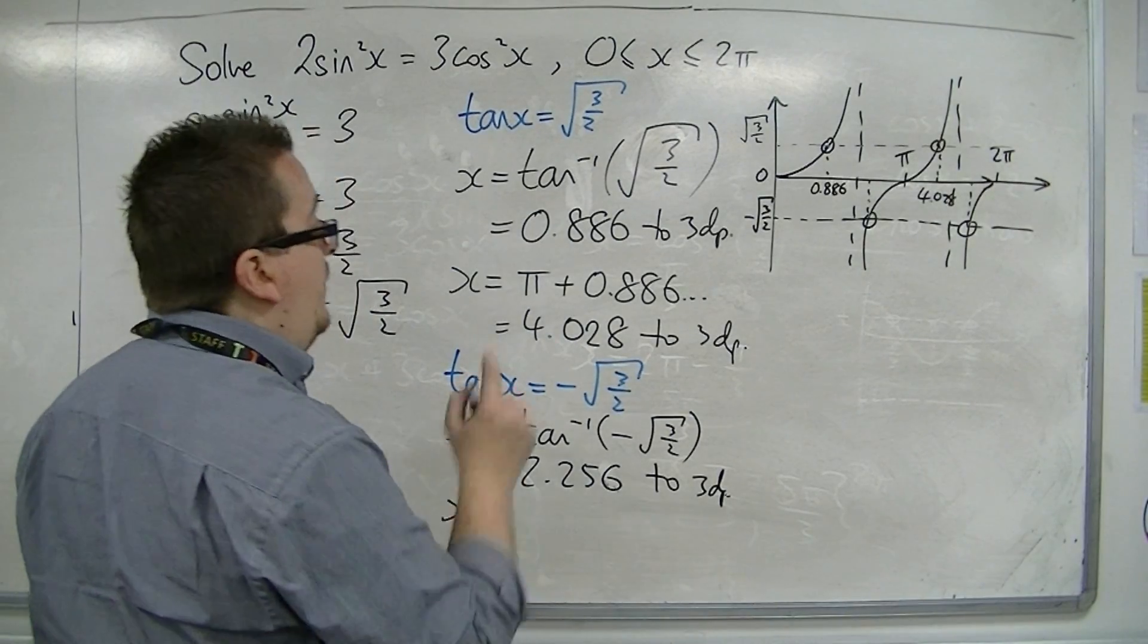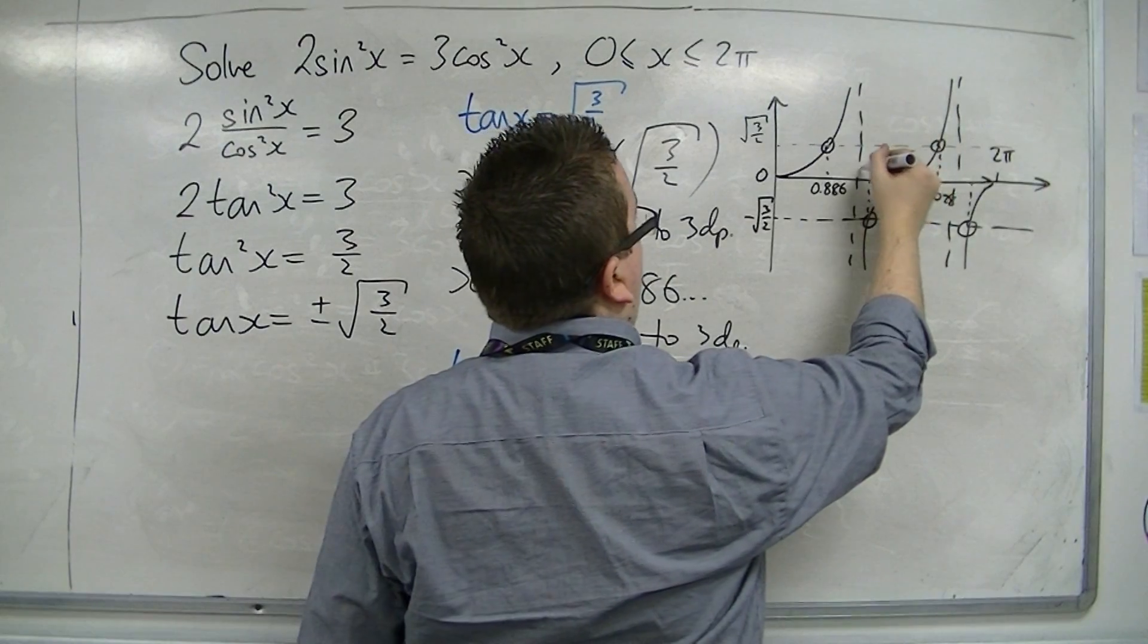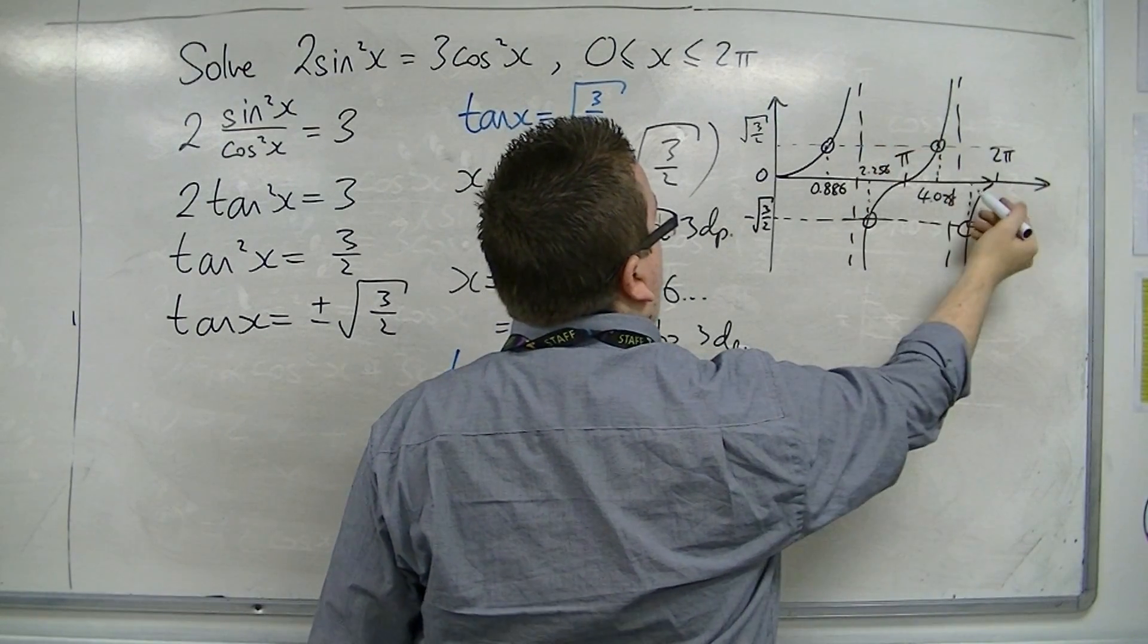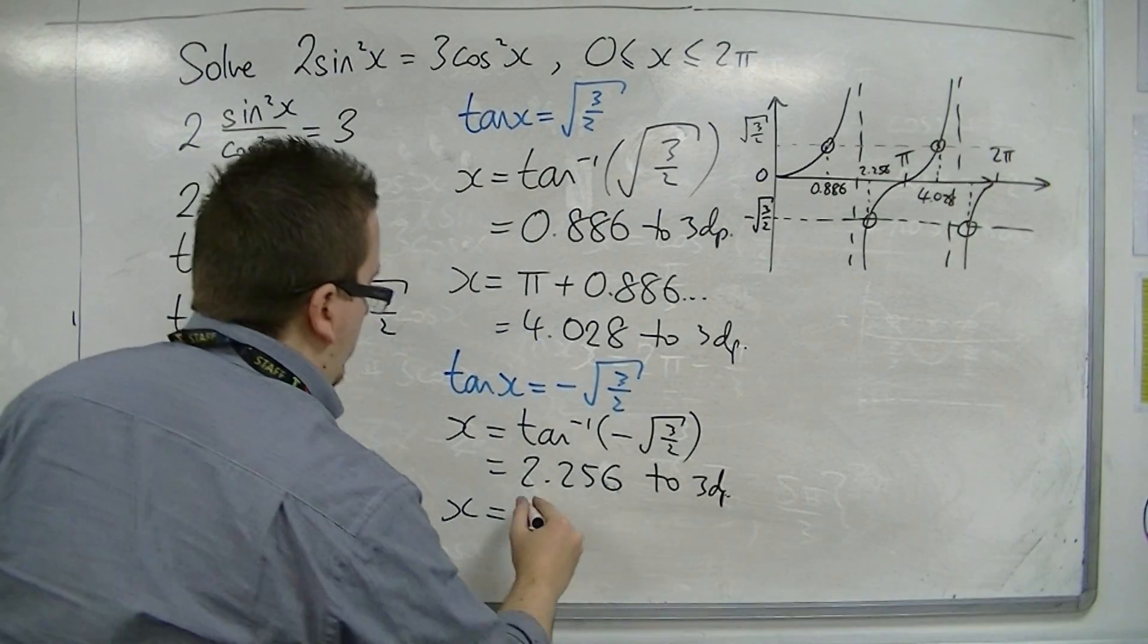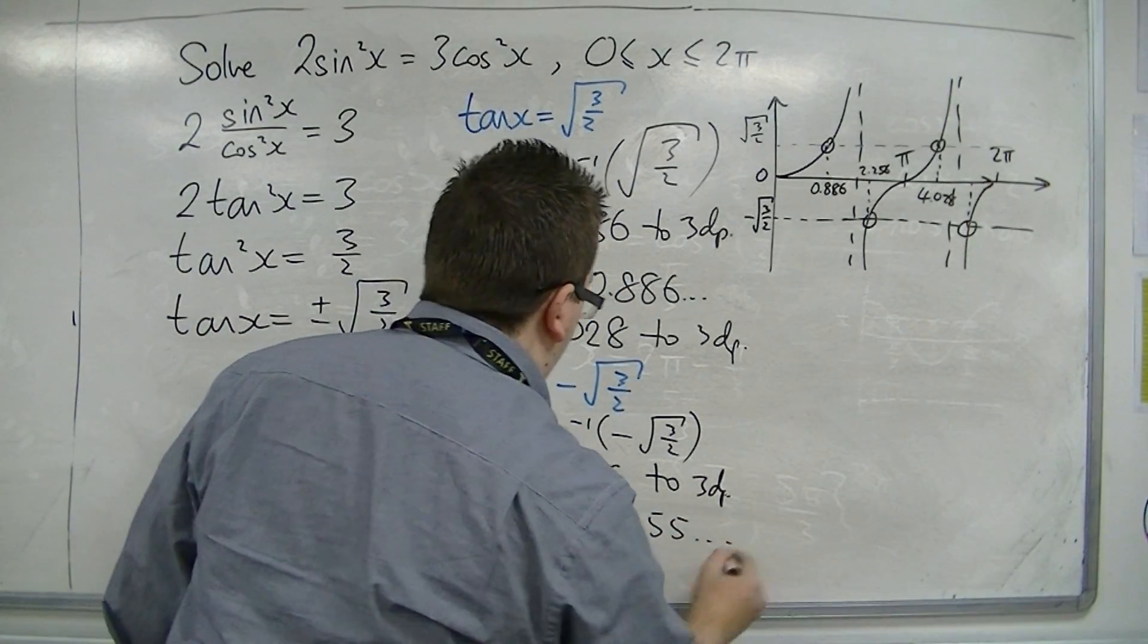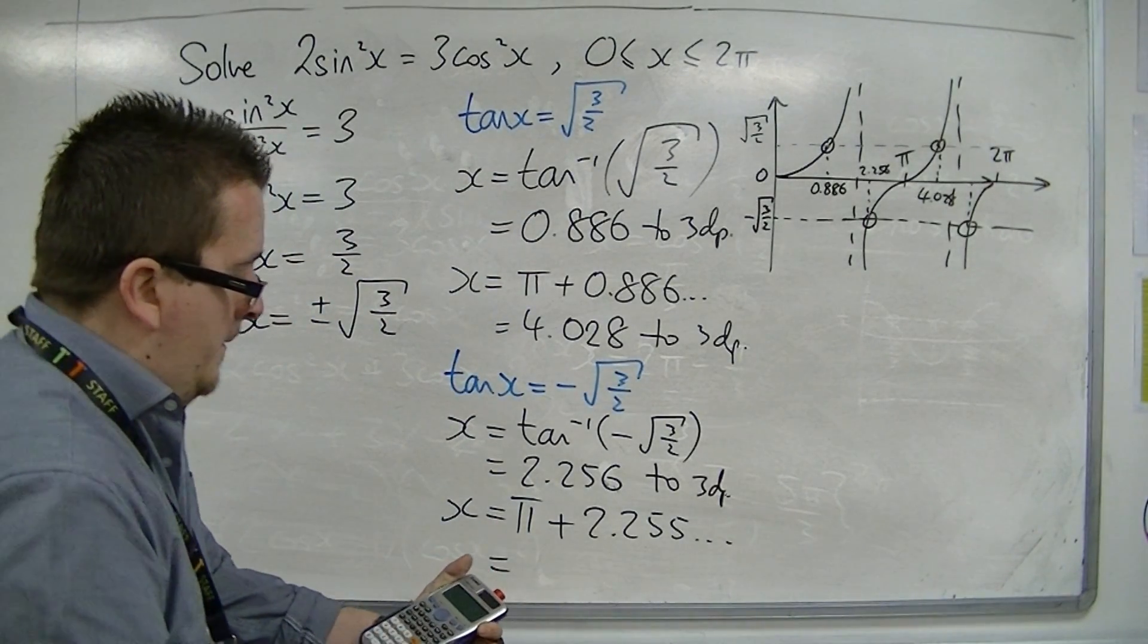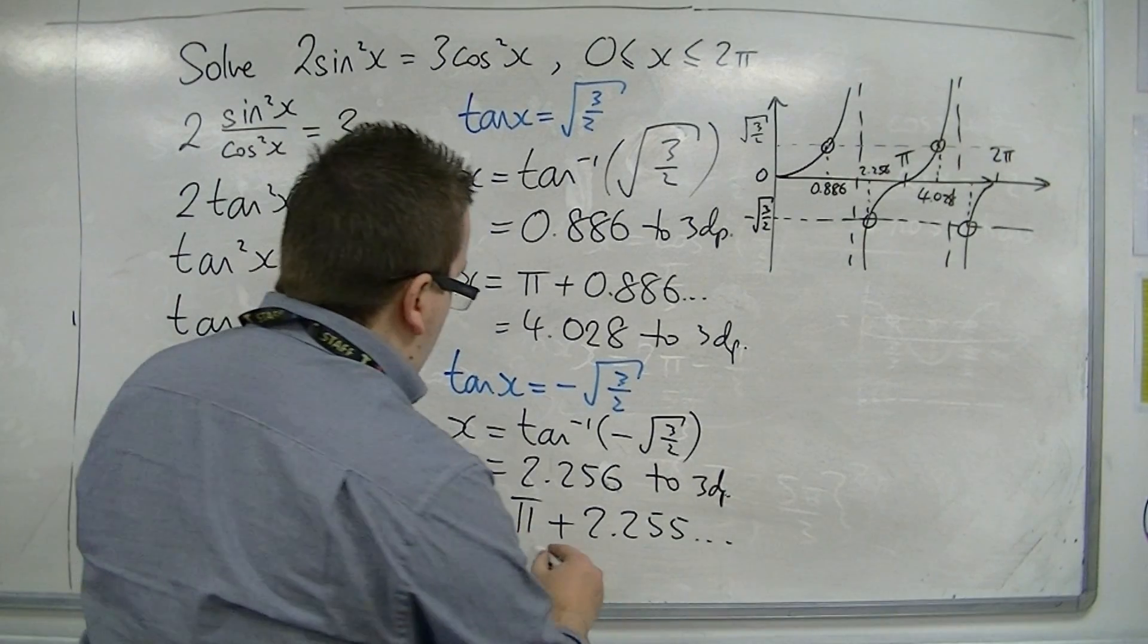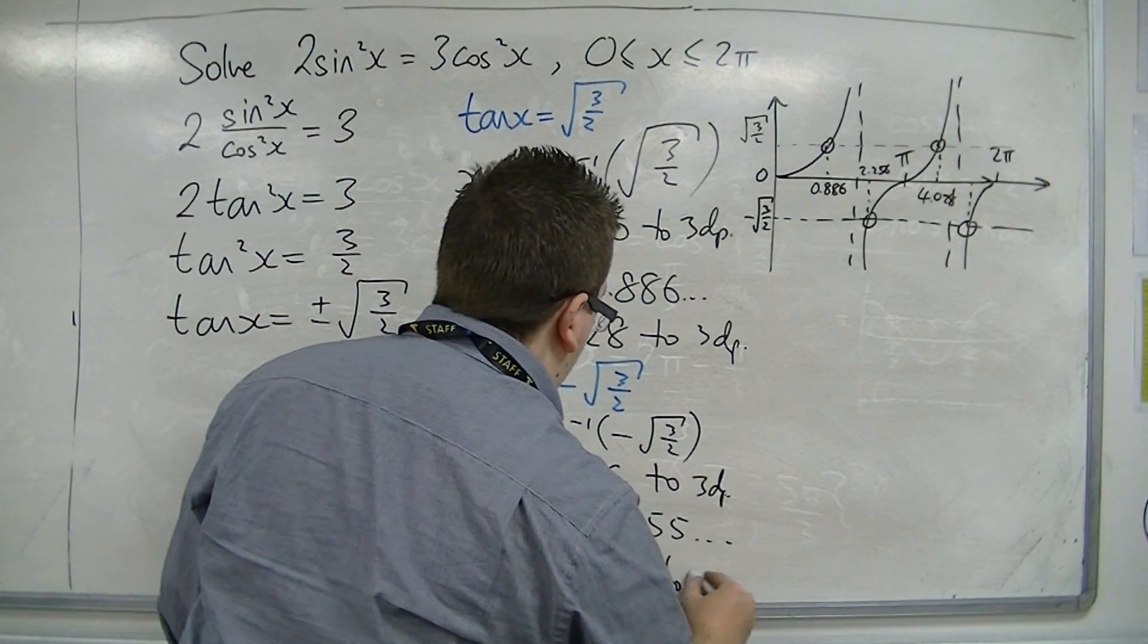The second solution is by adding pi to that one. Pi plus 2.255, using the full calculator display, which is 5.397 to three decimal places.